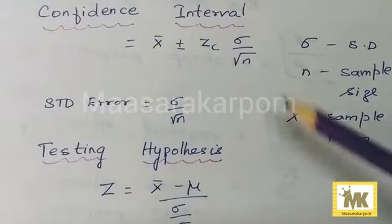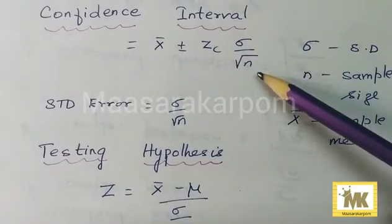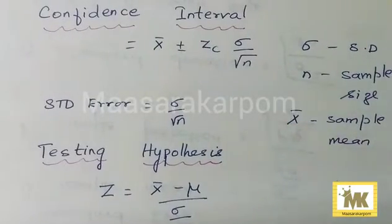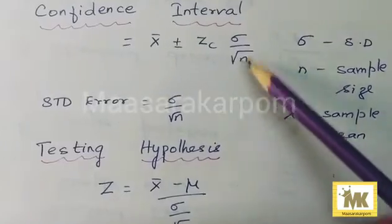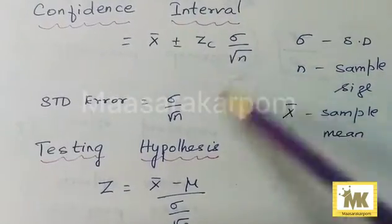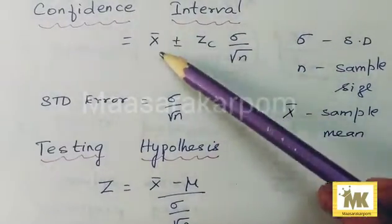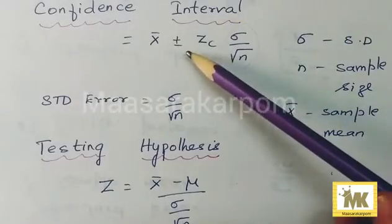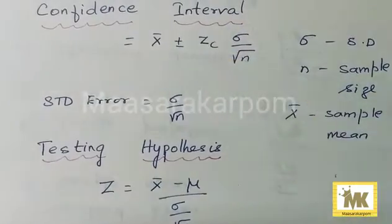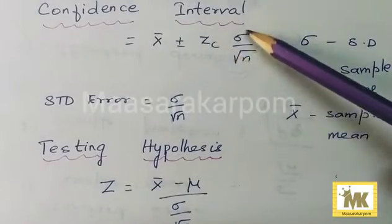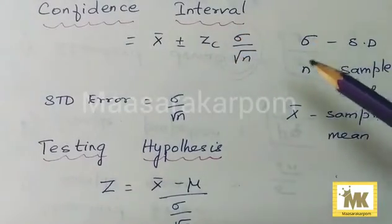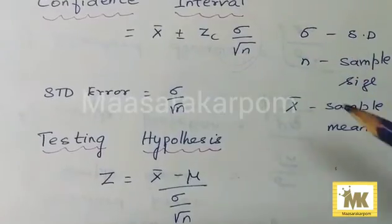The standard error is sigma by root n directly. The same thing is you can write x bar plus or minus Zc at 99% or 95%, that value directly. The value will be the same if you can add that value.